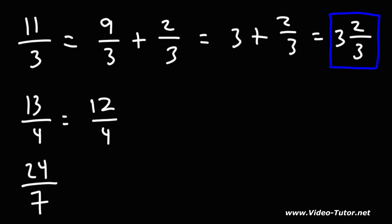16 is higher than 13, so we're not going to use that. 13 minus 12 is 1. So we can write 13 over 4 as 12 over 4 plus 1 over 4. 12 divided by 4 is 3. And then 3 plus 1 fourth is equivalent to 3 and 1 fourths as a mixed number.